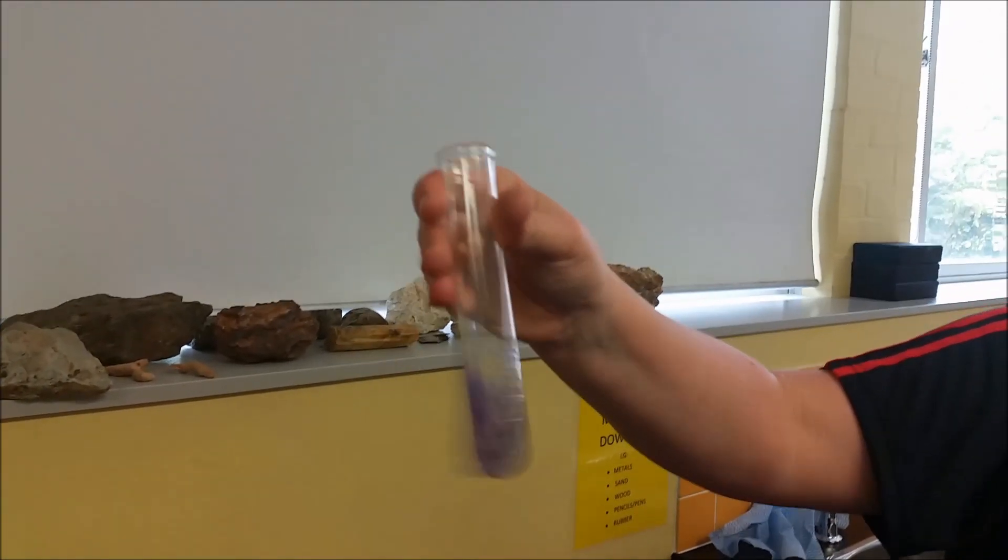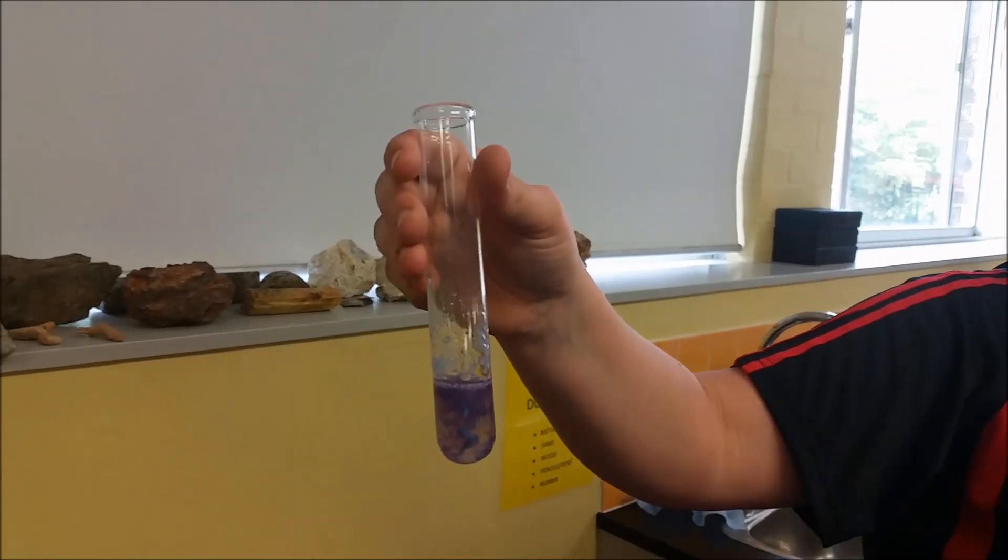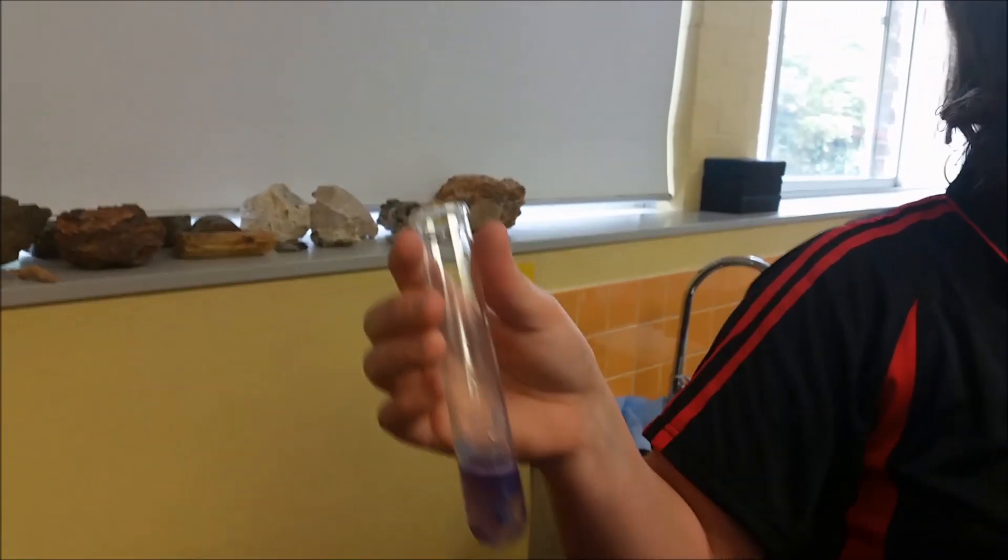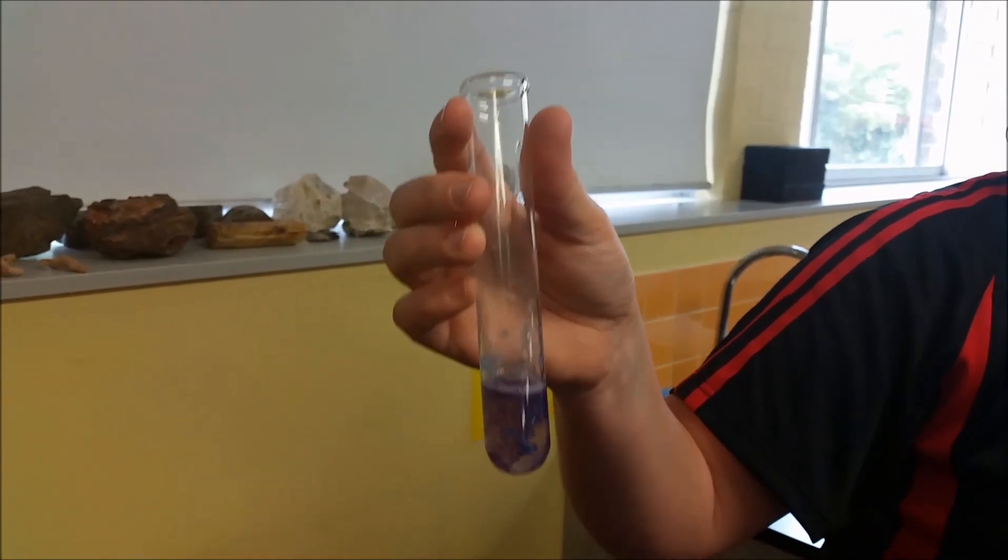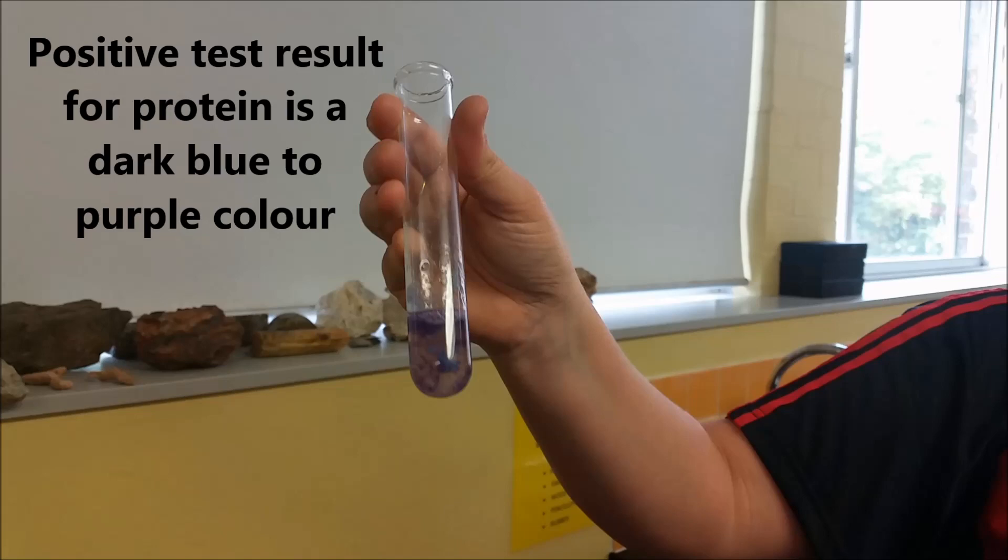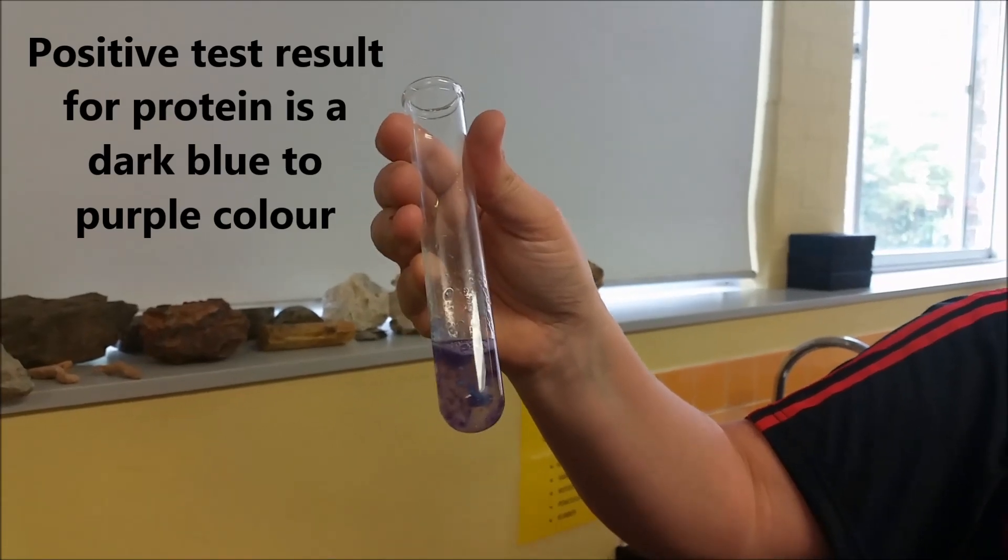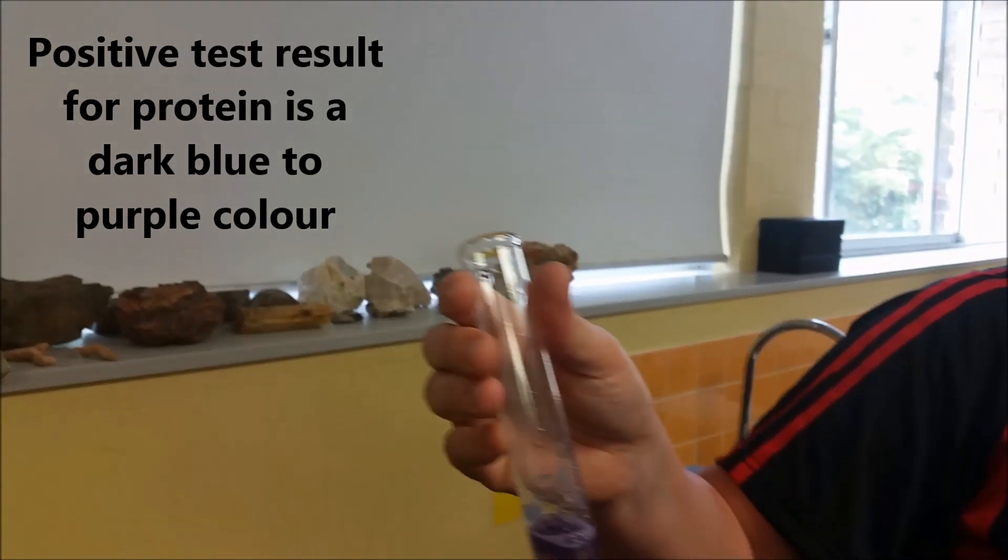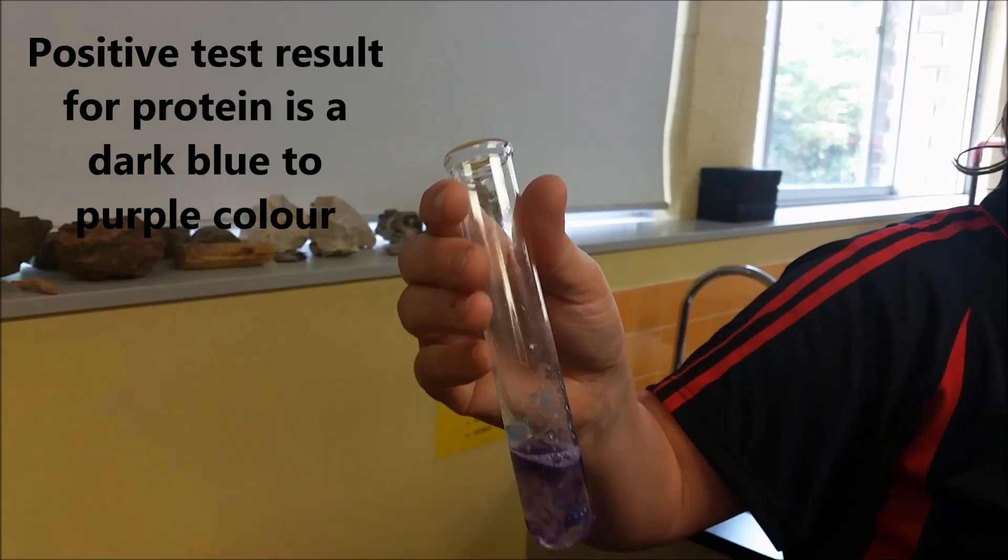When you add the copper sulphate solution to some other things, it'll automatically go blue because the copper sulphate's blue. If protein is present though, it will go either... Now this is... Because this is a strong solution, it has gone quite purple. However, it can go quite a dark blue.